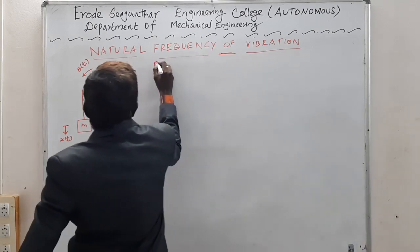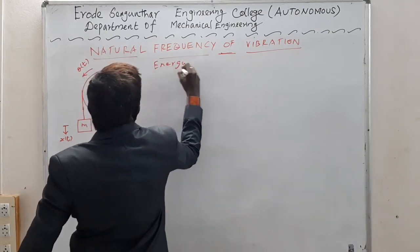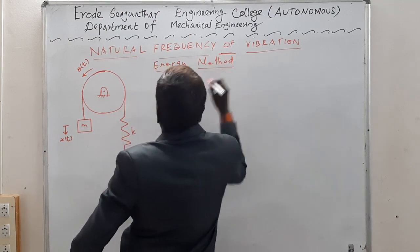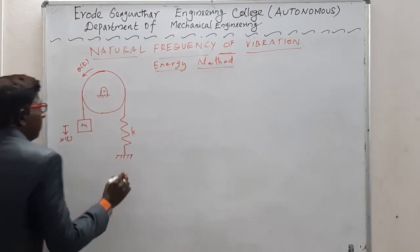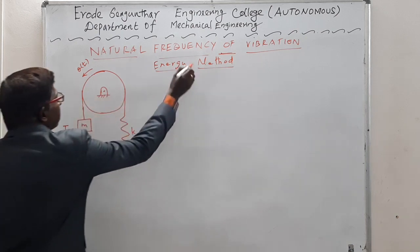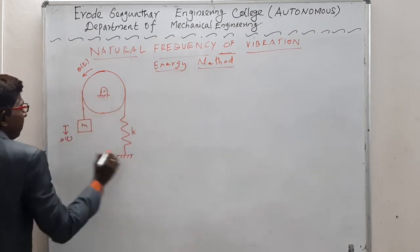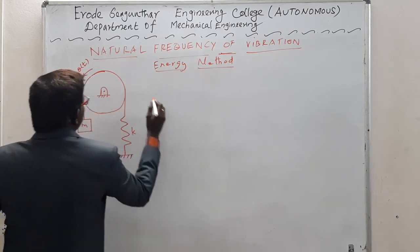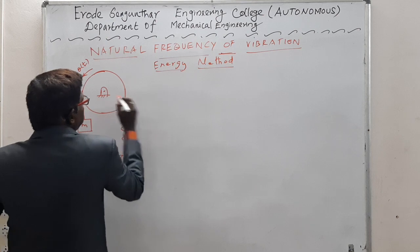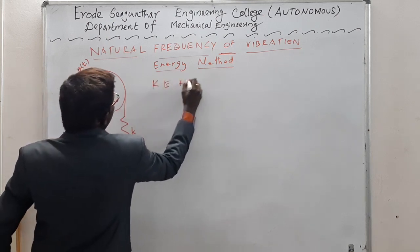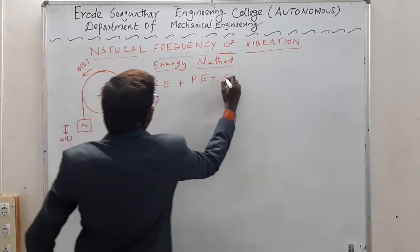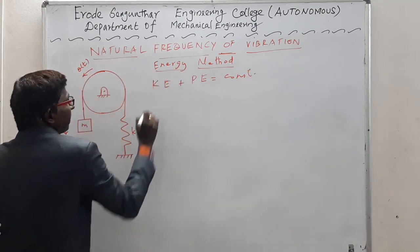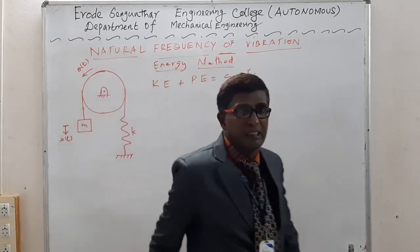We will use one method called the energy method. In the energy method, according to this approach, the summation of the energies present in a system at any instant of time will always be equal to a constant. For a spring-mass-pulley system, we can write KE plus PE equals constant, which means the summation of kinetic energy plus potential energy will always be equal to a constant.